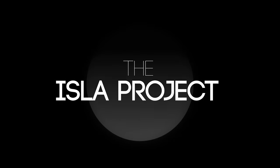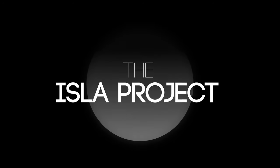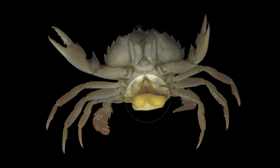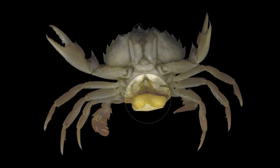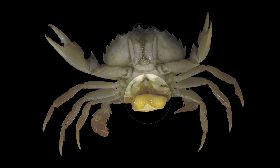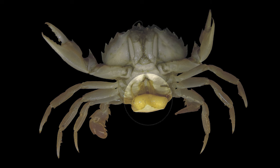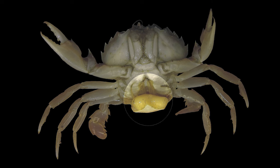This is the Isla Project. The first strategy we will discuss is parasitic castration, where the parasite blocks the host's ability to reproduce for its own benefit. In some cases, it feeds off the host's gonads, a behavior known as direct parasitic castration. In others, the parasite may interfere by secreting hormones that repress reproduction, or block the development of the host's genitals. This is known as indirect parasitic castration.